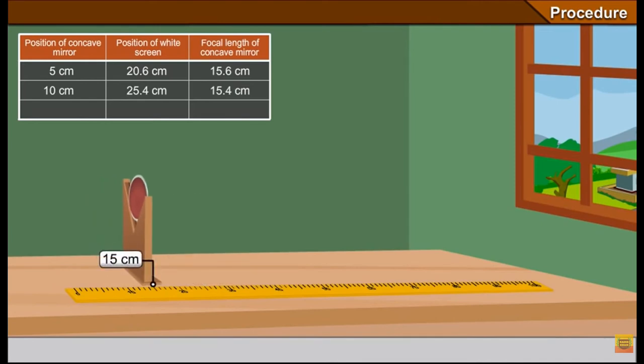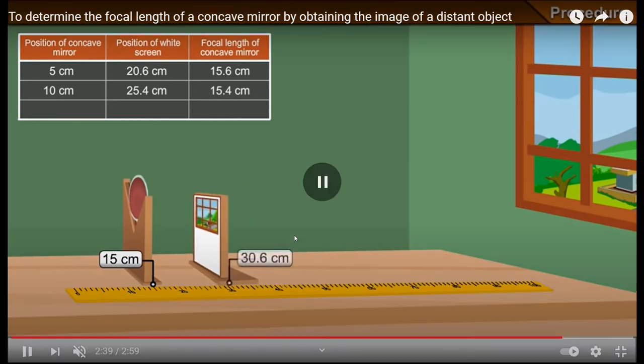Now for third reading it is at 15 centimeter and the mirror is at 15 centimeter for the third case and the screen is at 30.6 centimeter. So it's not a fixed position, we are bringing it forward or we are moving it backward. When the screen is at 30.6 centimeters, then a sharp, diminished, and inverted, well-focused image is formed on the screen.